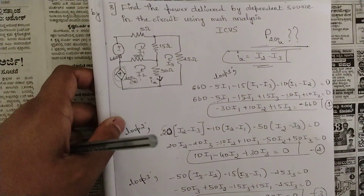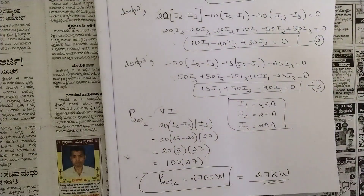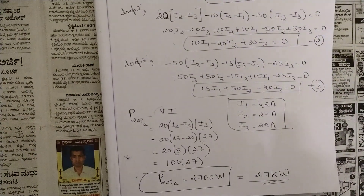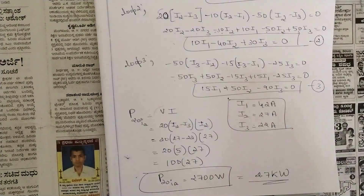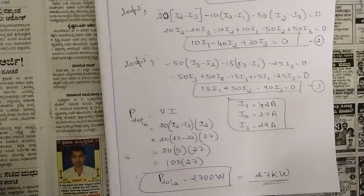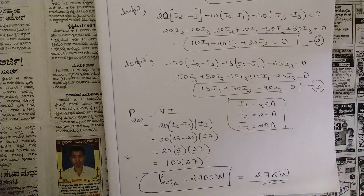Hope this problem is clear — a straightforward problem involving a dependent source. Identify the type of dependent source and then solve accordingly. Like this video — that's all for this session. The next concept is node analysis, which is very interesting. We have one more concept and then this module is over. Thank you.